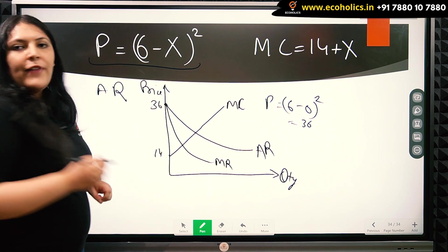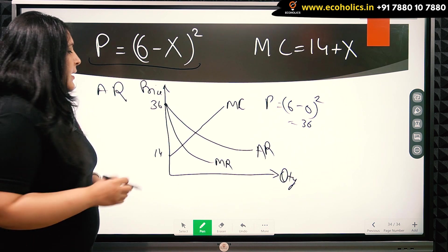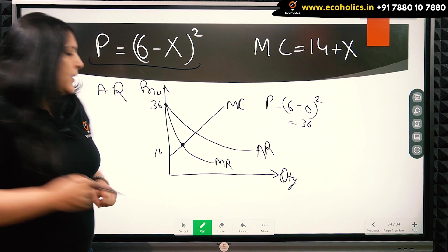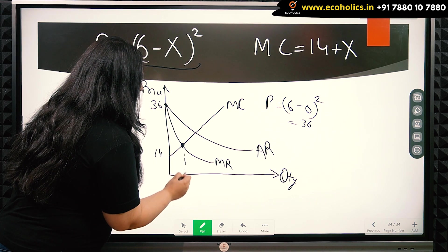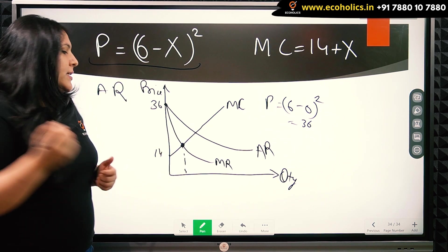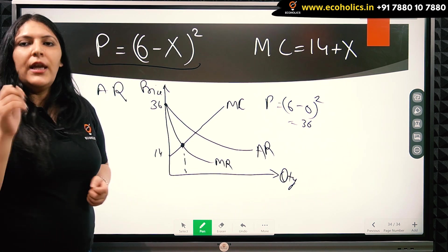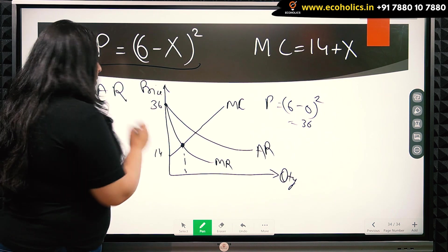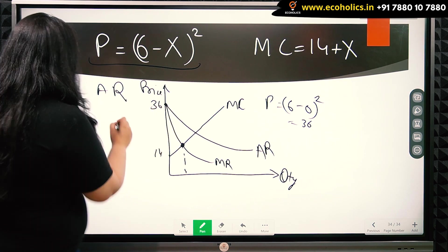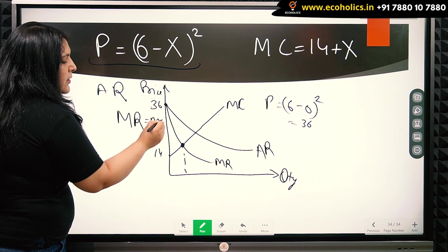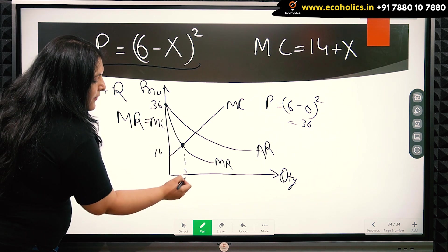We have to find the consumer surplus. Firstly, what we have to do is find out the value of the equilibrium for the monopolist. So for a monopolist, equilibrium is at marginal revenue equals marginal cost.